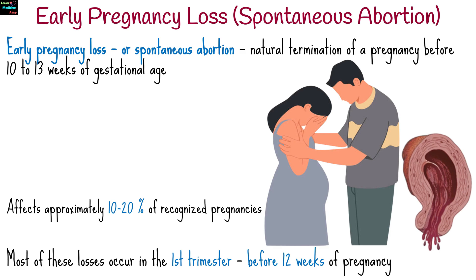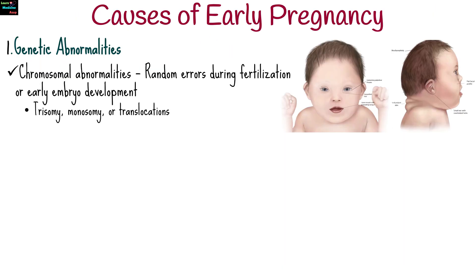The causes of early pregnancy loss are diverse. The most common cause is chromosomal abnormalities, usually due to random errors during fertilization or early embryo development. Conditions like trisomy, monosomy, or translocations are examples.